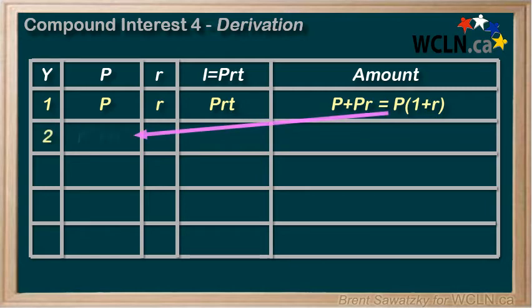We carry that down to year 2. So, our new principle, because we are compounding, is the amount left over from year 1, that is, P times 1 plus R. Our interest rate for year 2 is still R, and therefore, our interest being PRT, or just PR with T equal to 1, equals P times 1 plus R times R.